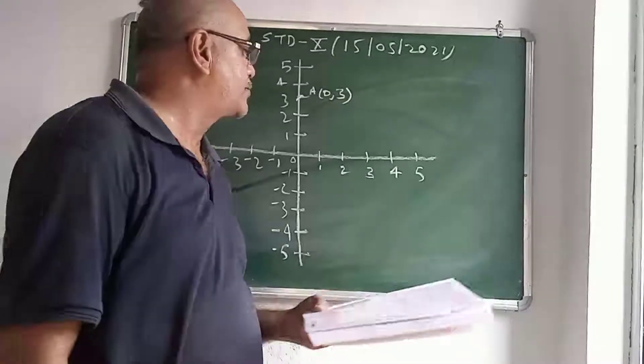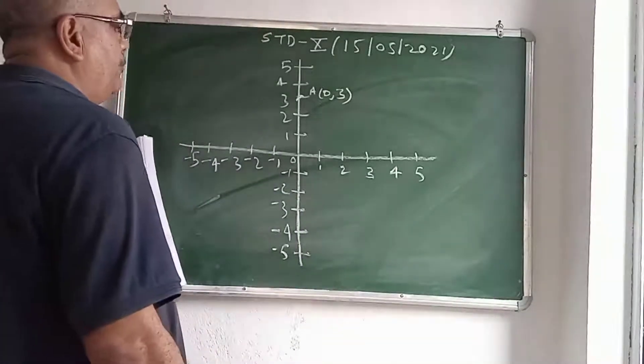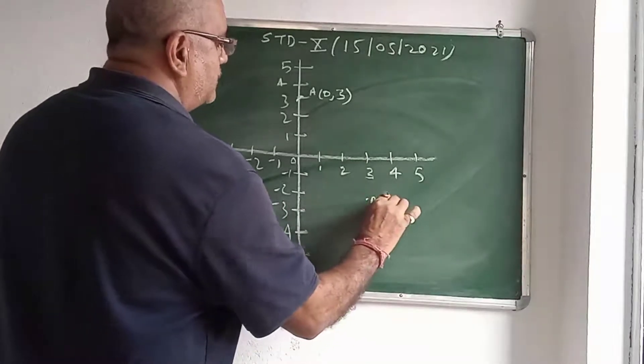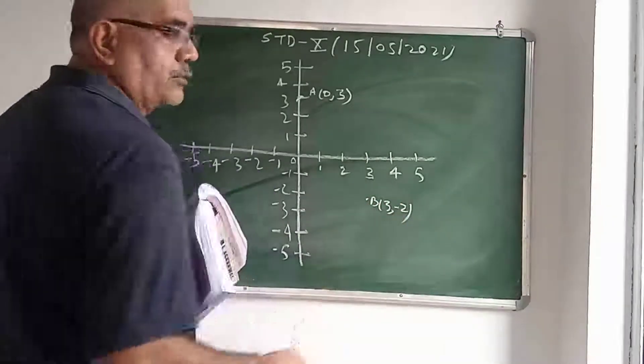So first of all you have to locate the given coordinate on the quadrant or invariant point then on line. B(3, -2). 3 and minus 2. This is B, 3 minus 2 in the fourth quadrant.